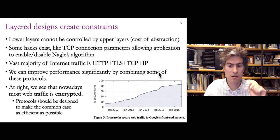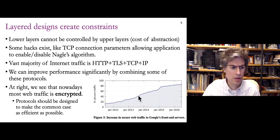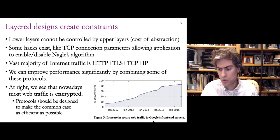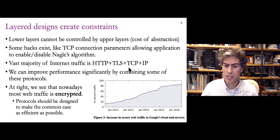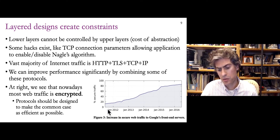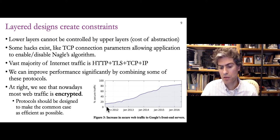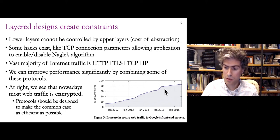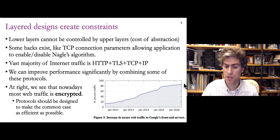This plot shows the percentage of traffic to Google's front-end servers — including YouTube — that is secure traffic, meaning using TLS and HTTPS instead of plain unencrypted HTTP. The plot goes from 2011 to mid-2016, a period when adoption of encryption on the internet changed dramatically. Nowadays it's close to a hundred percent — well over 95%. You'll notice in modern web browsers, if you're visiting an unencrypted site, there's a warning in the URL bar, whereas in 2012 it was quite common for web traffic to be unencrypted.